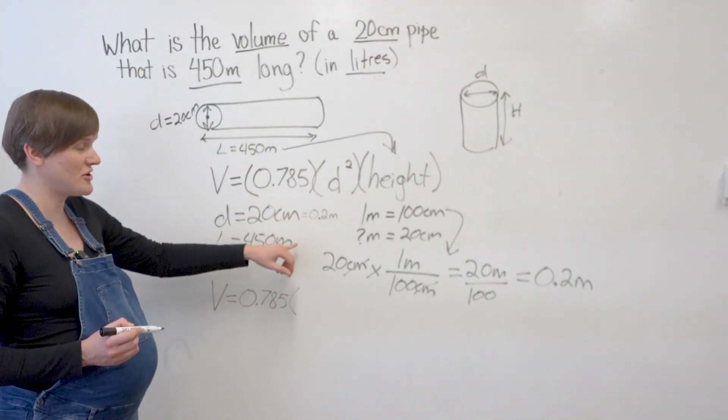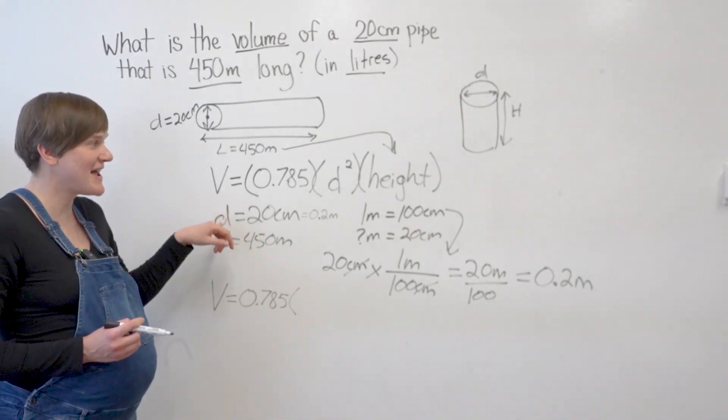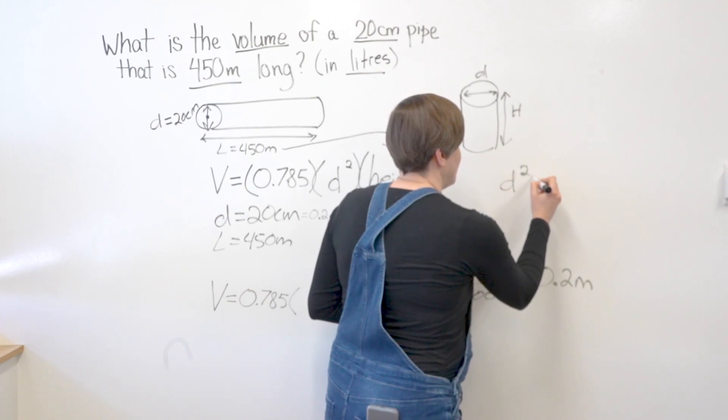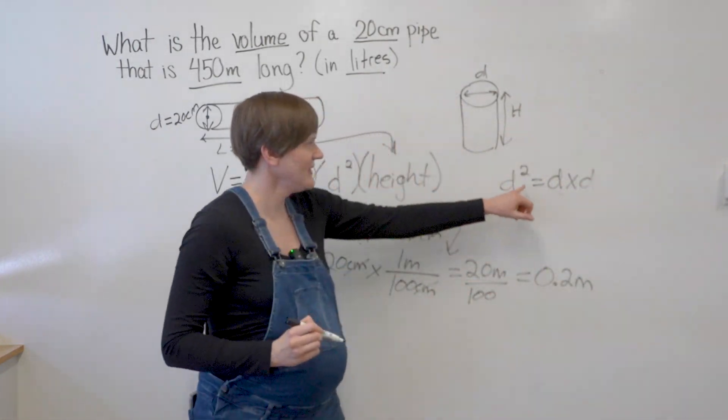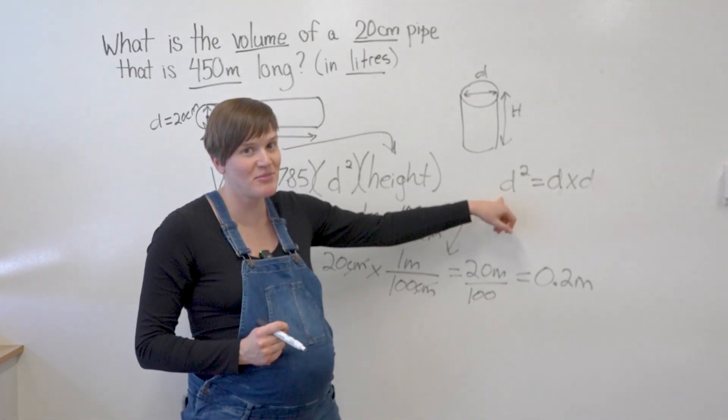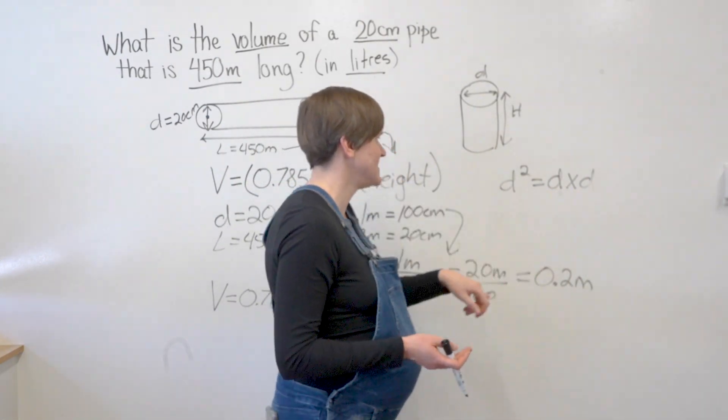So diameter squared here. It's not 2 times diameter. It's diameter times diameter. Right? The little number tells you how many times to multiply the larger number, or in this case, a letter by itself. So D squared is D times D.